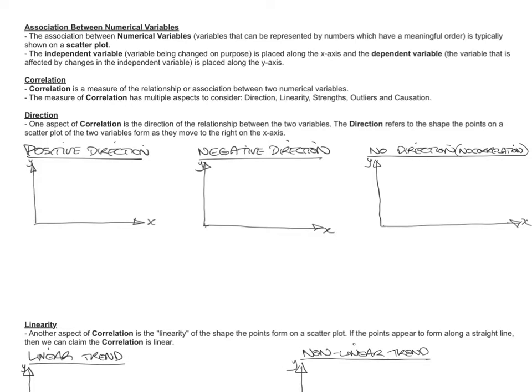Hopefully you're aware of what a scatter plot is, basically an x and a y-axis, x and y and dots on it. The independent variable, the variable that we change on purpose in an experiment, is placed along the x-axis and the dependent variable, the variable that changes because of the independent variable, is placed along the y-axis.